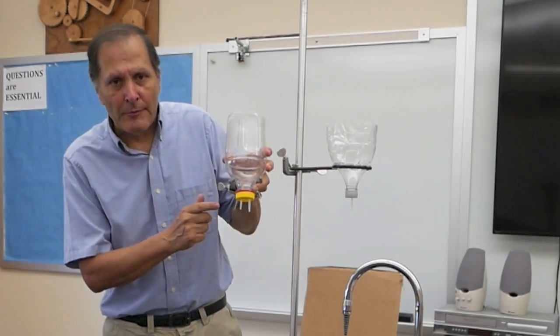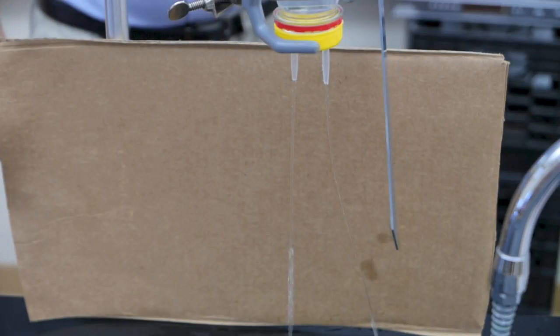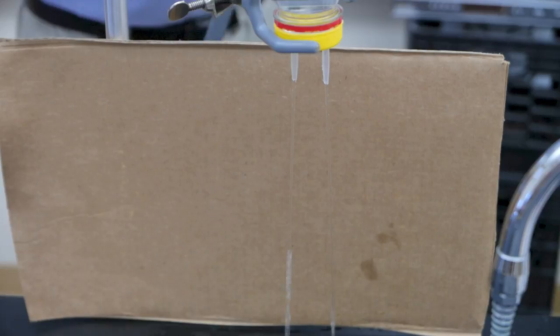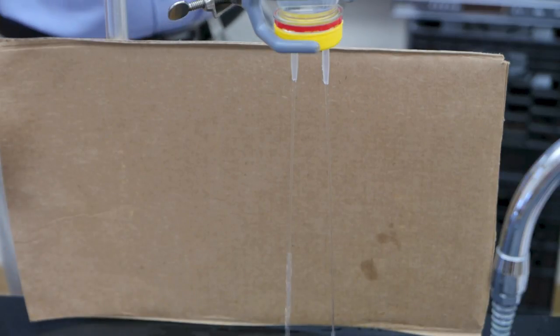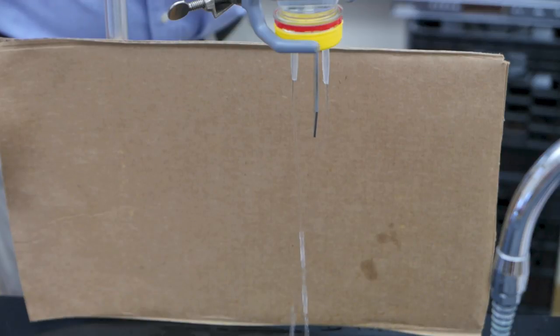Now how about if we try two streams? Now I can bend either stream with a static charge, but let's try in between them. What I'm hoping for is to see if I can get the streams to deflect away from each other. Now I've tried this several times, and I simply can't get it to work.